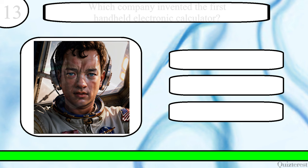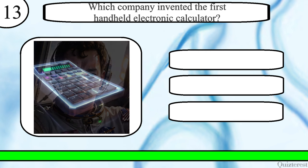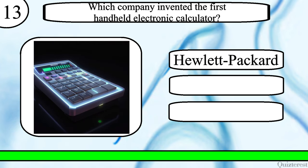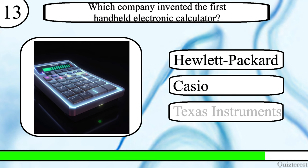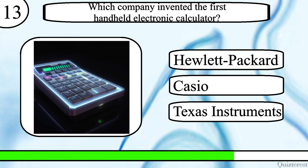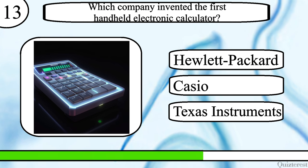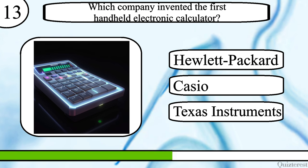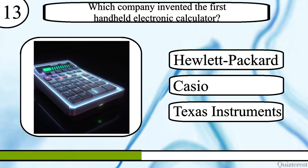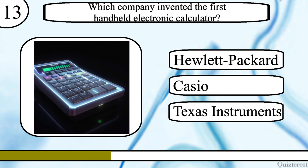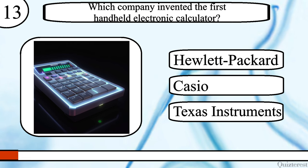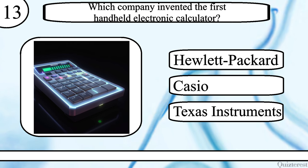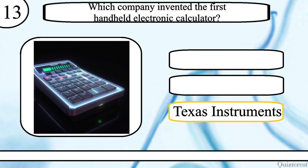Question 13. Which company invented the first handheld electronic calculator? Hewlett-Packard, Casio, or Texas Instruments? The correct answer is Texas Instruments.